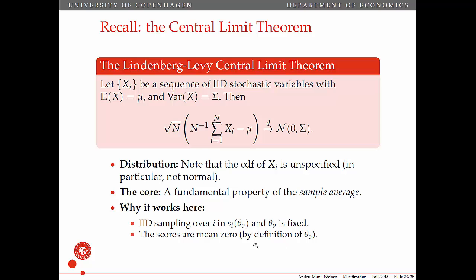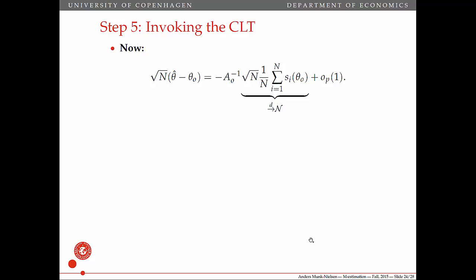This is by definition of theta naught: that theta naught minimizes the expected criterion function, so it solves the expected first order conditions. So now we invoke the central limit theorem. Here we have it: it's an average of something — technically minus its expectation, which is zero — blown up by square root of n, so this becomes asymptotically normal.